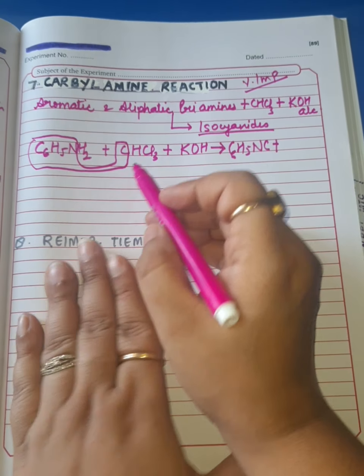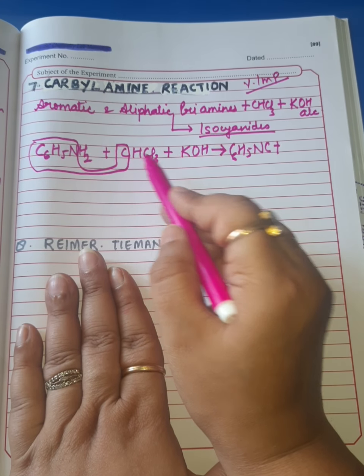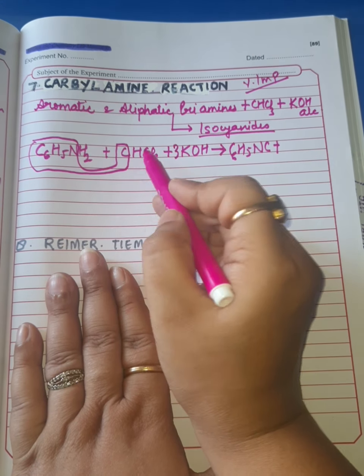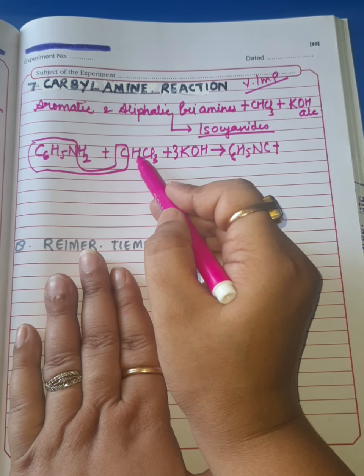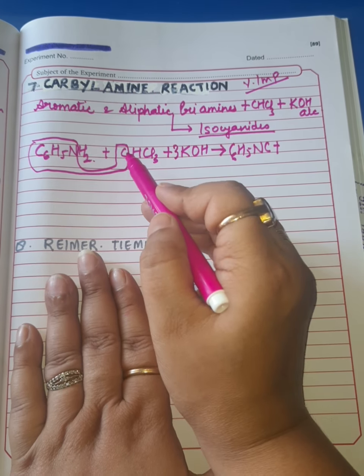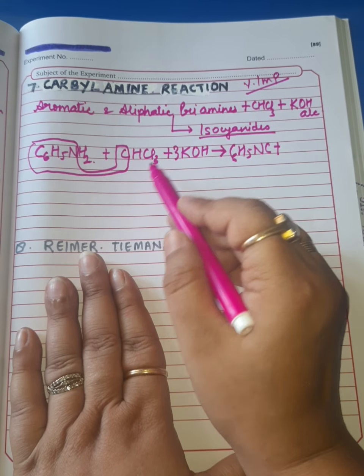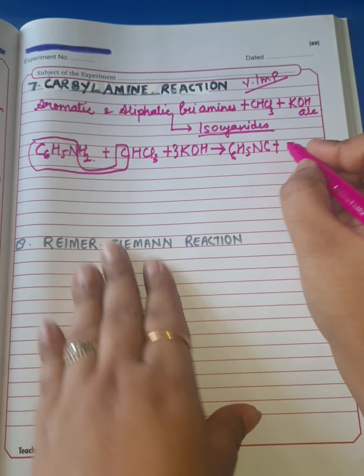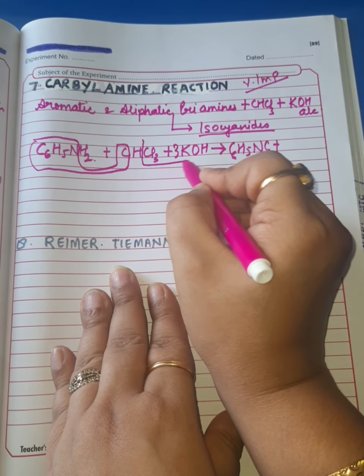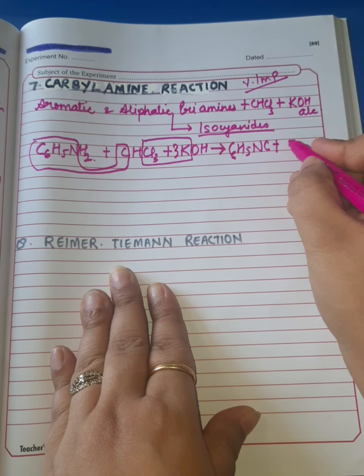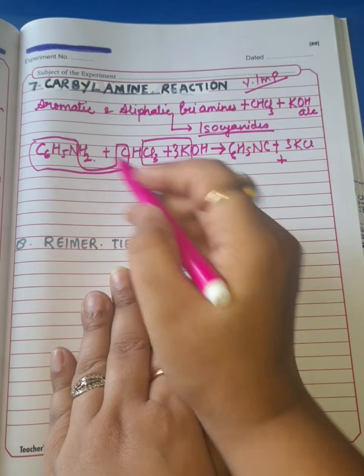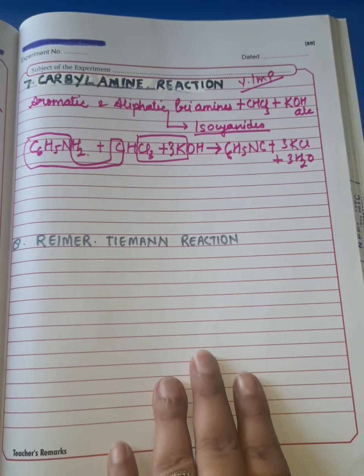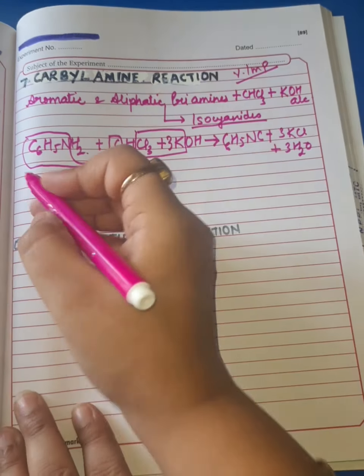Now let's see the byproduct. Here we have 3H and 3Cl, so we need 3KOH because we have 3HCl. They will get neutralized with each other, so as a result we get 3KCl and 3H2O. It's very easy to learn and remember.